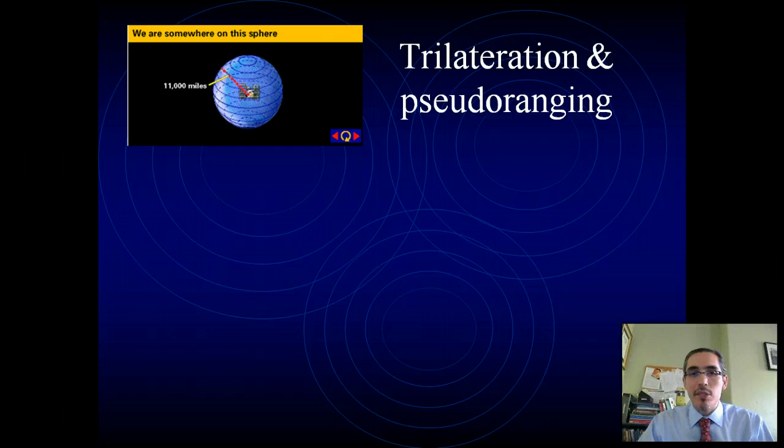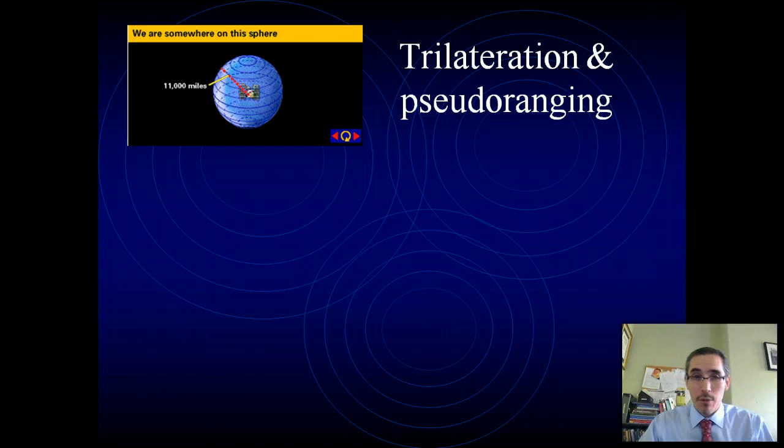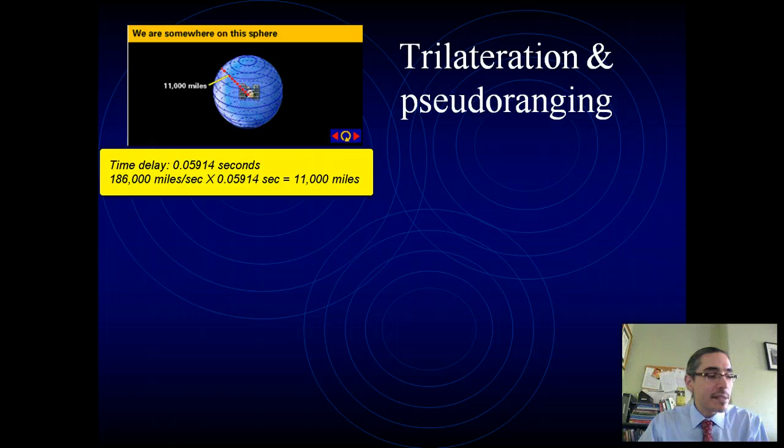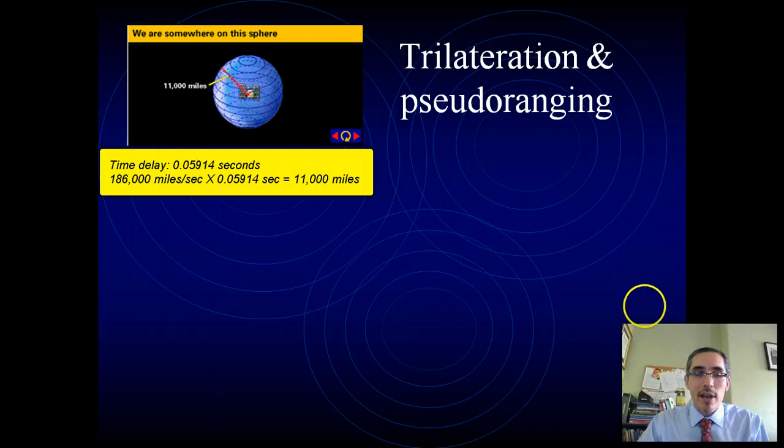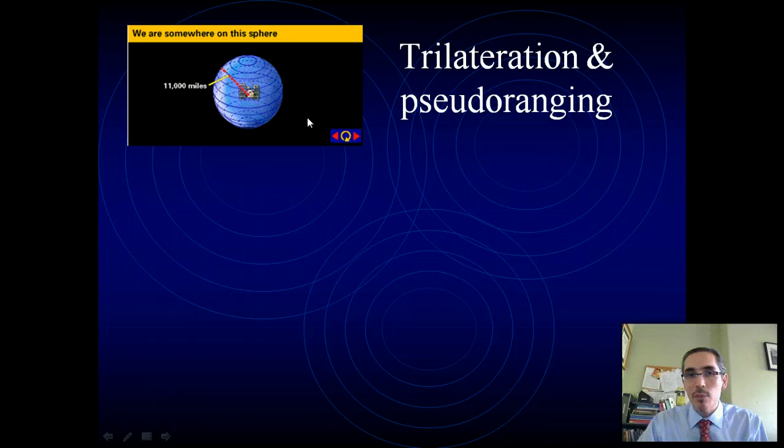Essentially, the way it works is, just to give an example, say we have a receiver and it gets a signal from a satellite, and the signal takes about almost six hundredths of a second to arrive. If you multiply that number, say 0.05914 second, I have these written down over here, times 186,000 miles a second, that's going to come down to about 11,000 miles. So by tracking the signal delay of six hundredths of a second, you know that you're about 11,000 miles from that satellite. The problem is that that's in a spherical direction. You could be anywhere on that sphere and be 11,000 miles from that satellite, so that doesn't help you very much.